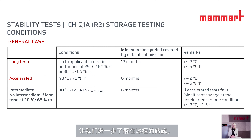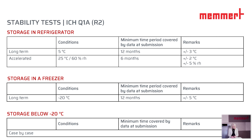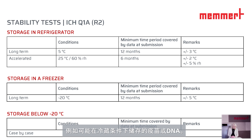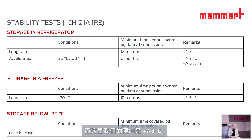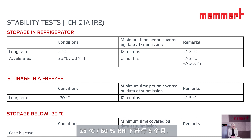For storage in a refrigerator — meaning products intended for refrigerated storage, such as vaccines or DNA oligonucleotides — long-term testing is performed at 5°C for 12 months within a limit of ±3°C. Accelerated testing has to be done at 25°C and 60% RH for six months, with limits of ±2°C and ±5% RH.